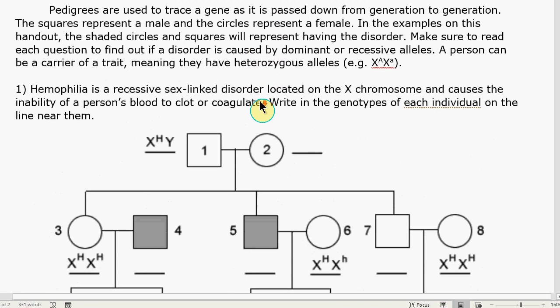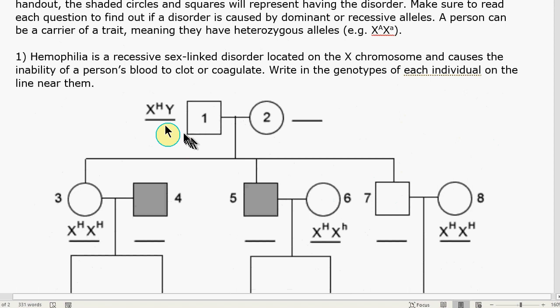In sex-linked traits, it's all about the sex chromosomes. So on all of these individuals, we're going to be writing the chromosomes XY for males and XX for females, and then we're going to use a superscript to indicate the gene that's on those chromosomes.